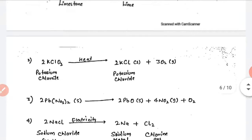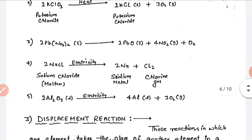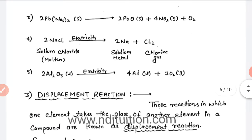For example, CaCO3 when heated decomposes into CaO plus CO2. Similarly, when KClO3 is heated it forms potassium chloride plus oxygen. Another example: Pb(NO3)2 decomposes into PbO plus NO2 plus O2. NaCl when electricity is passed through it forms Na plus Cl2. Aluminum oxide when electricity is passed through it decomposes into Al plus 3O2.